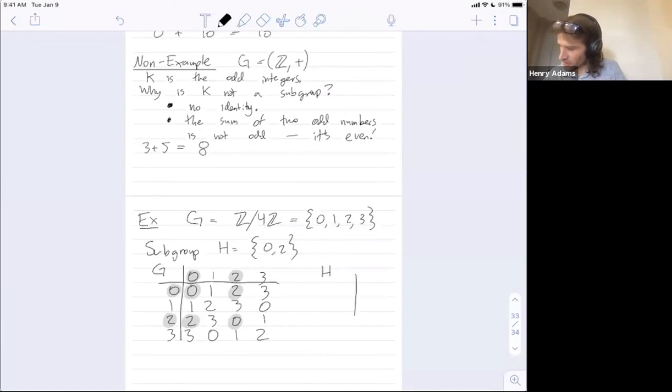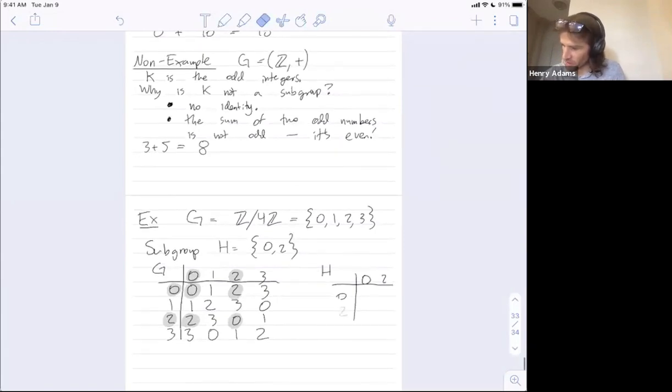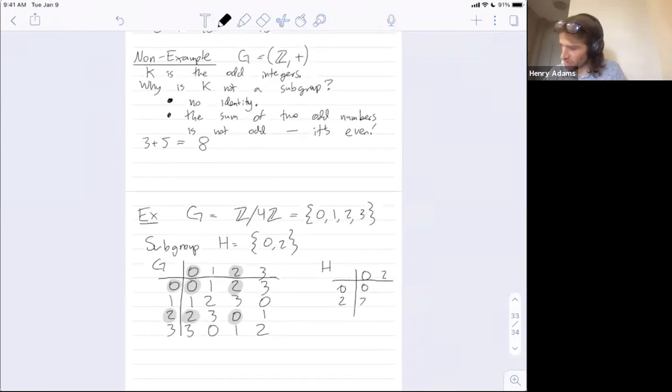So on the left, this is really a picture of the group G. But sitting inside it is a picture of the smaller group H, right? If I wanted to draw just H, I would just draw this. Let me make this organized. 0 combined with 0 is 0, 0 combined with 2 is 2, and 2 combined with itself is 0. So you should really think of this smaller group H - it's sort of living inside this larger group G.